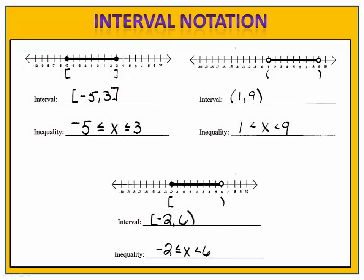In our first set, we have from negative 5 to positive 3. Notice that we have solid circles, so in interval notation we're going to have brackets. Using the inequality, we're going to use the less than or equal to signs because negative 5 and positive 3 are included in the set.